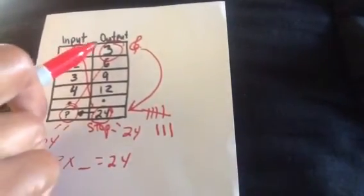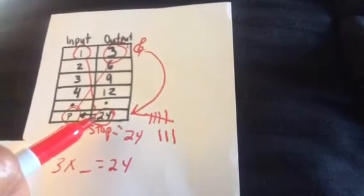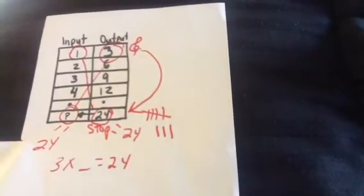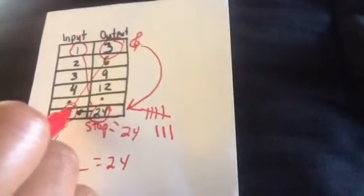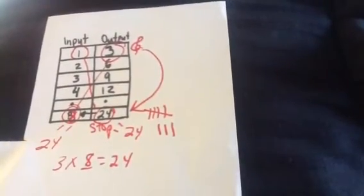So we sung the 3 song. We stopped when we heard 24. And that actually took us 8 steps. So the correct answer to this is really 8. It's a little confusing, a little difficult. Let's try it one more time.